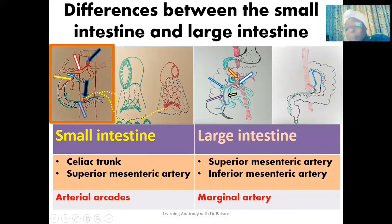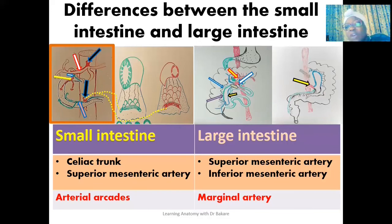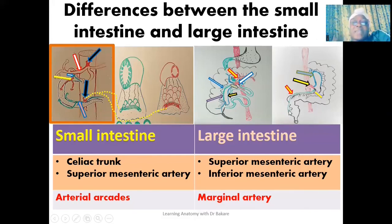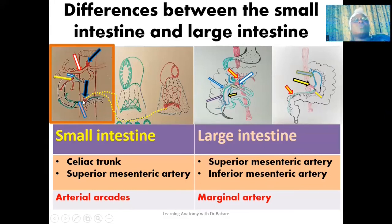The remaining regions of the large intestine are supplied by the inferior mesenteric artery, which gives off the left colic artery supplying the left one-third of the transverse colon and descending colon, sigmoidal arteries supplying the sigmoid colon, and the superior rectal artery supplying the rectum and upper anal canal. So the large intestine is supplied by the superior and inferior mesenteric arteries, while the small intestine is supplied by the celiac trunk and superior mesenteric artery.